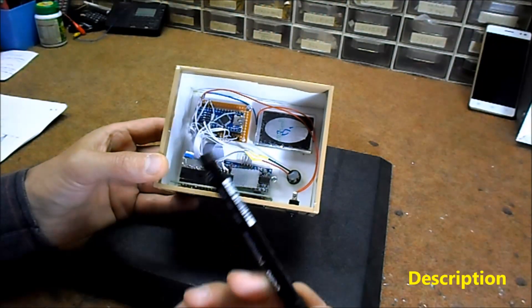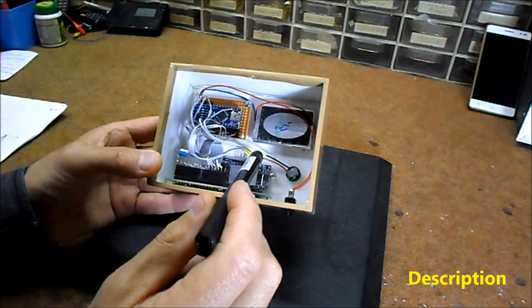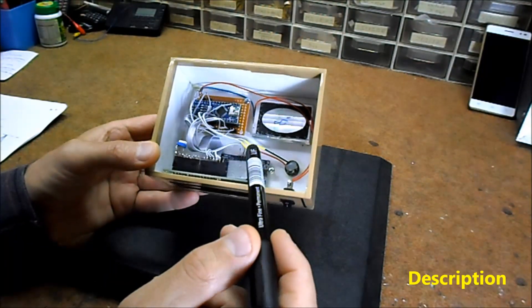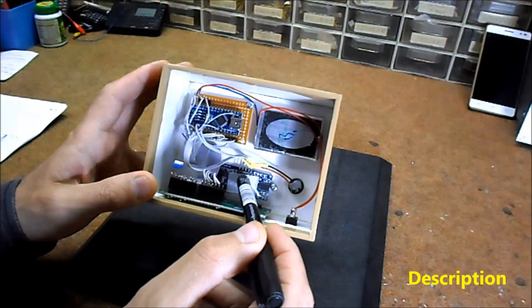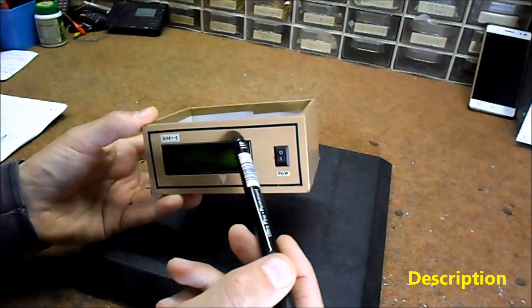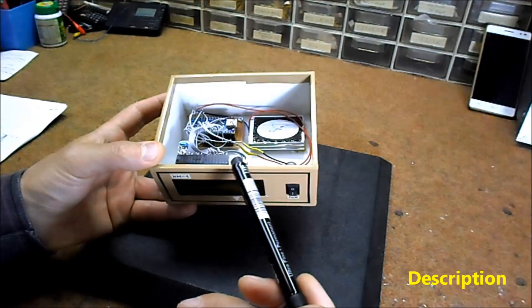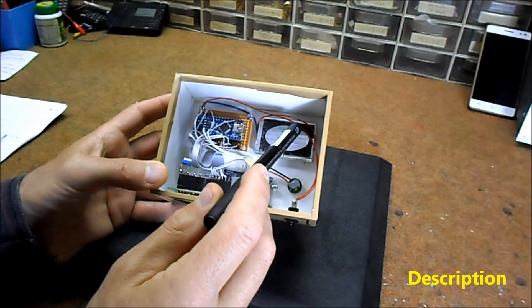Arduino Nano microcontroller, HC-SR04 ultrasonic sensor - that is that sensor. Next, LCD display, buzzer, and battery.